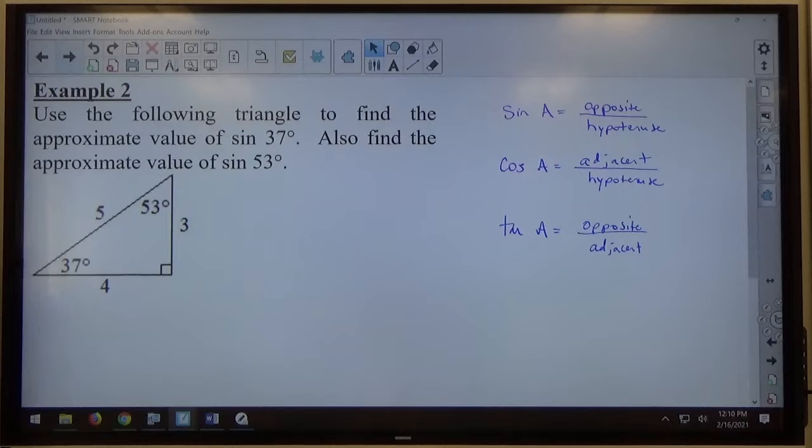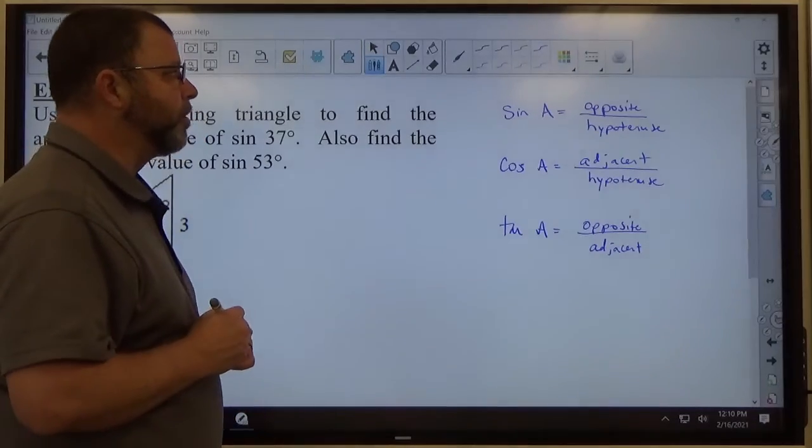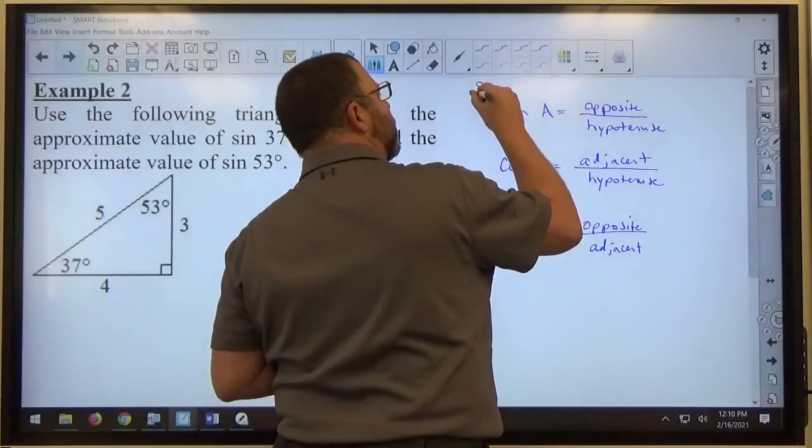Cosine and tangent are just ratios of two of those three sides every time. And there is a mnemonic device that helps us memorize the exact ratios here, which the mnemonic device is SOHCAHTOA.